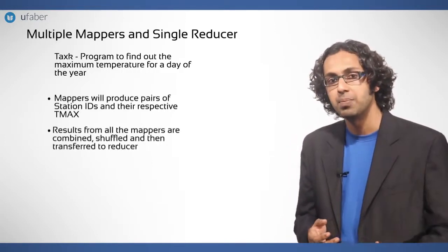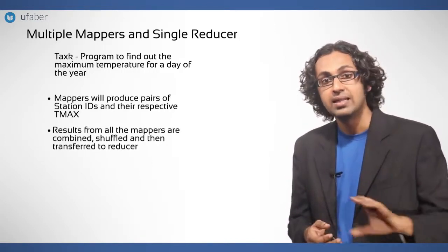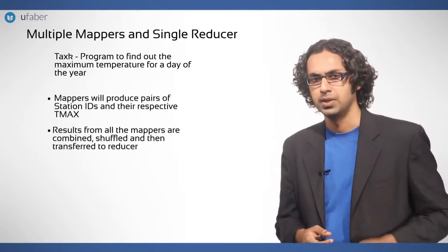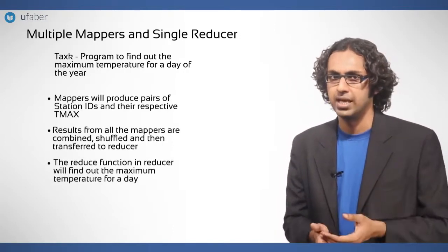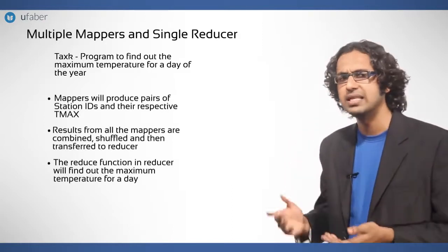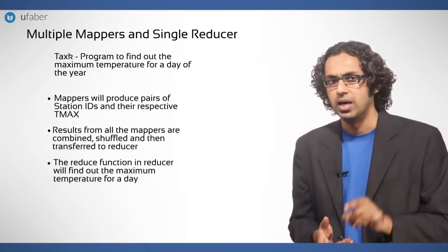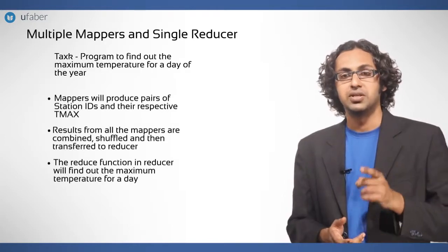Results from all the mappers are combined, shuffled and then transferred to reducer. The reduce function in reducer will find out the maximum temperature for a day of the year displayed on the screen as output. This task required only one reducer to execute the job.